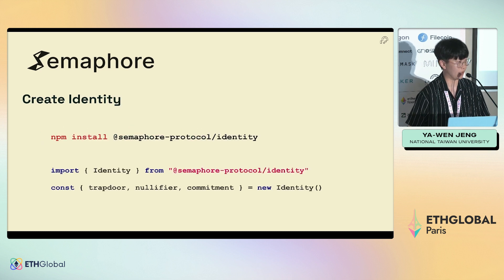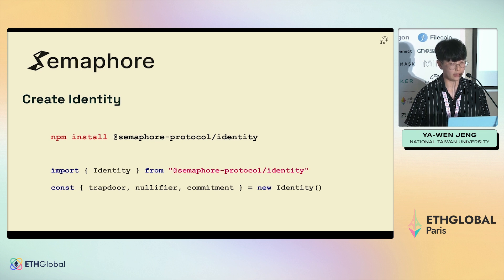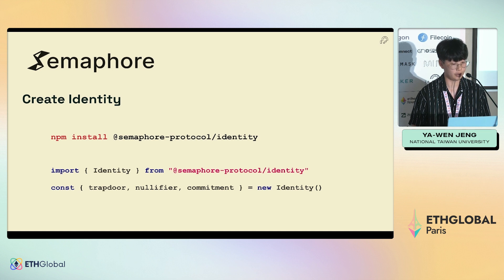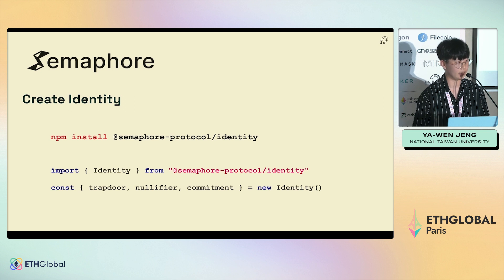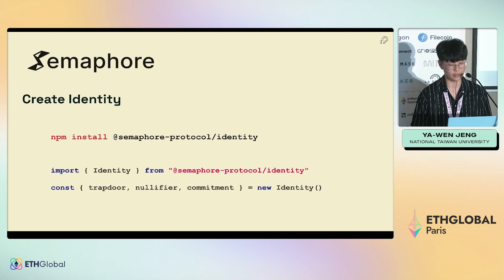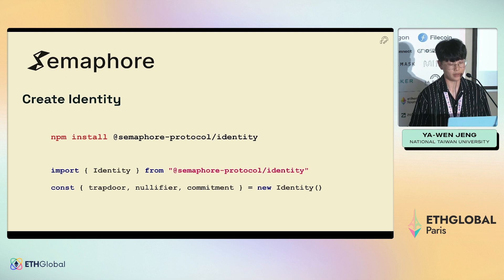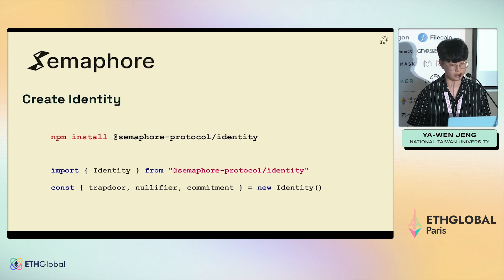Here are some example codes. To generate a random identity, you install the Semaphore identity package and then use the new identity function to create an identity. There are several secrets and public signals in this identity — they are called trapdoor, nullifier, and commitment. You can go to the documentation to see the definitions of these different terms.